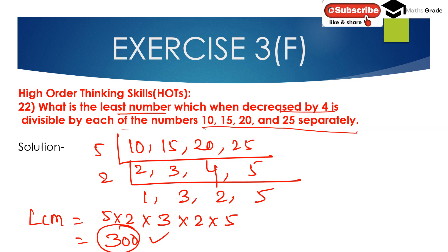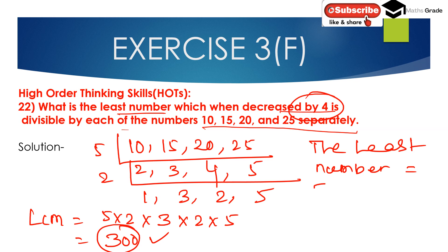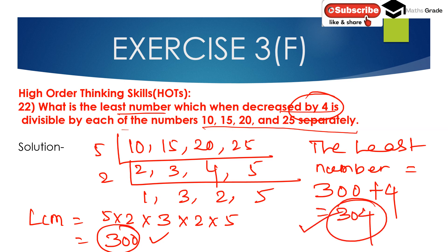Since the least number when decreased by 4 must be divisible by each of 10, 15, 20 and 25, the number must be LCM plus 4. So the least number is 300 plus 4, which is 304. Therefore, 304 is the least number which when decreased by 4 is divisible by each of the numbers 10, 15, 20 and 25.